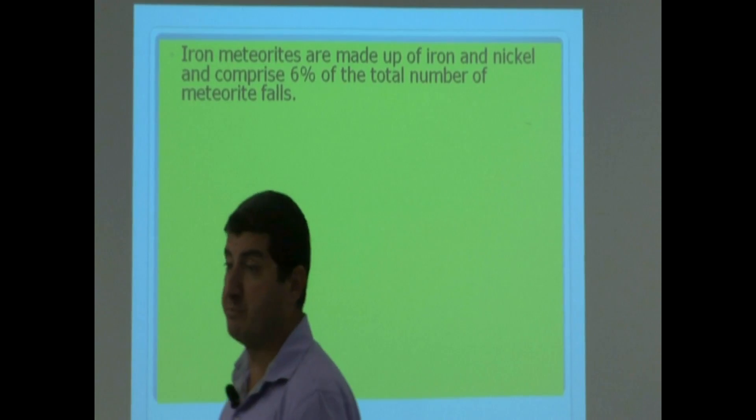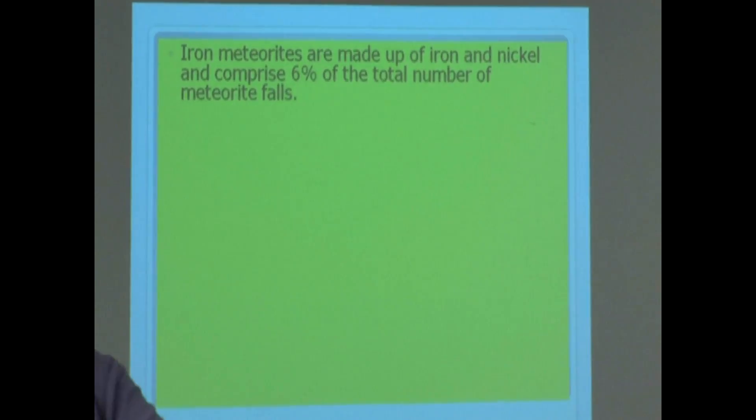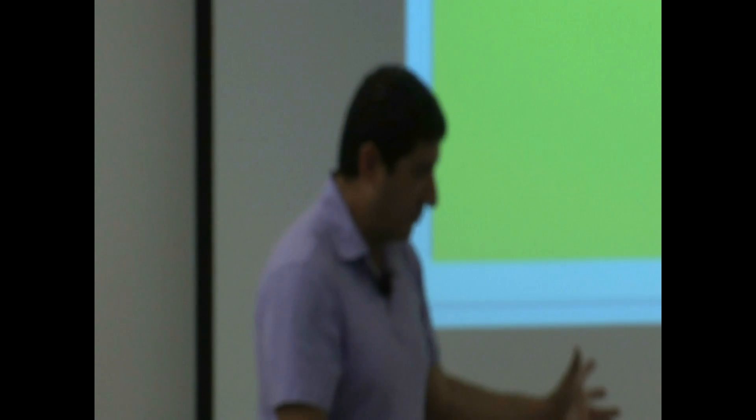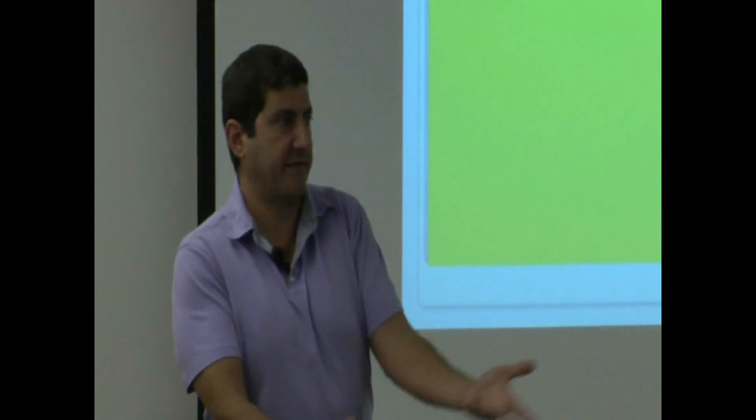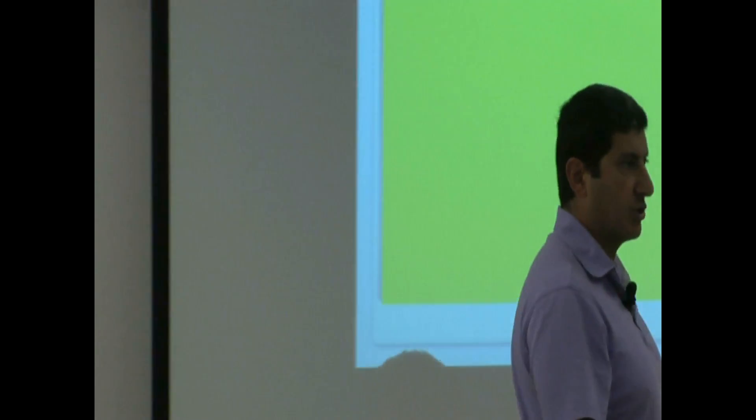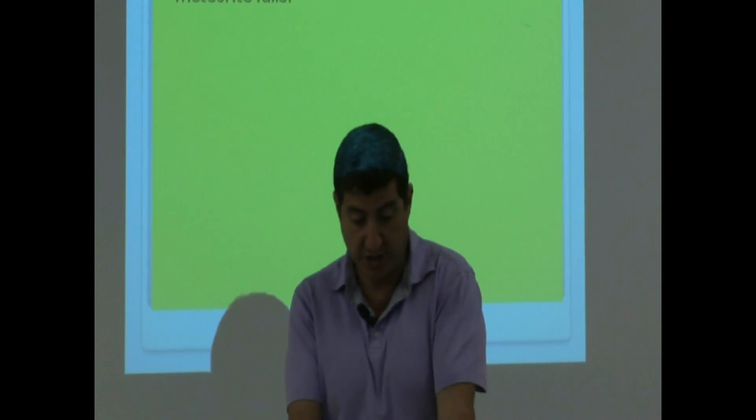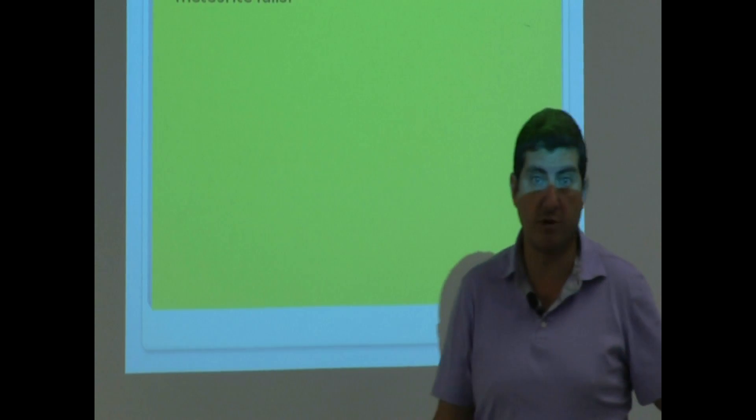But when it does happen, if you're hiking somewhere and you find a big piece of iron in the middle of nowhere, usually you now know it's a meteorite. You're not going to find a big piece of iron like that. So even though they don't happen frequently, if you notice it, you're going to notice that it's a meteorite right away.